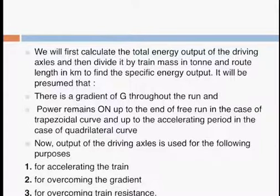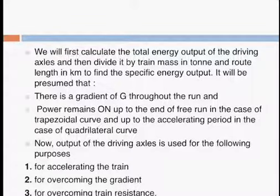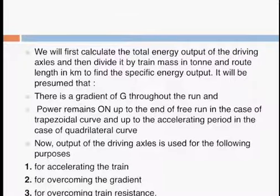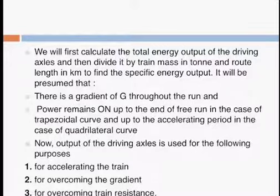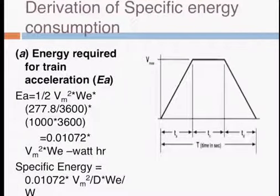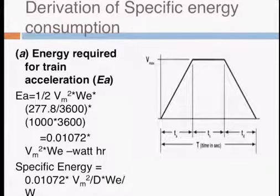We first have to calculate the total energy output on the driving axle, then divide it by the train mass in tons and the route length in kilometers. The gradient G throughout the run will remain up to the end of free run in case of a trapezoidal curve, while for a quadrilateral curve the acceleration period differs. The output on driving axles is used for three purposes: first, for accelerating the train; second, for overcoming the gradient; and third, for overcoming the train resistance. As you can see in this graph, the x-axis has time in seconds and the y-axis has speed in kilometers.